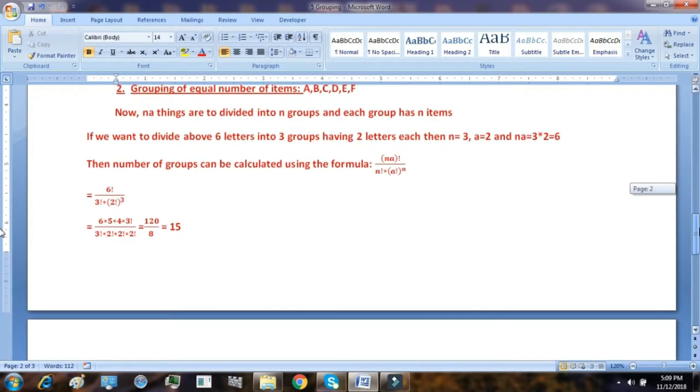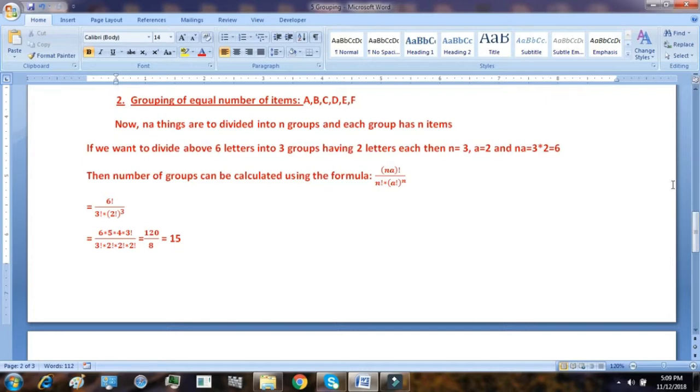Next, we have grouping of equal number of items. Suppose I have 6 letters A, B, C, D, E, F. Now let us see a concept. How do we group the equal number of items? Equal number of items means I want to make a certain number of groups and each group will have the same number of items. Now in the previous example for grouping of unequal number of items, we had 2 groups, one containing 2 letters and the other containing 3 letters. But in this case, we will have the same number of items in all the groups.